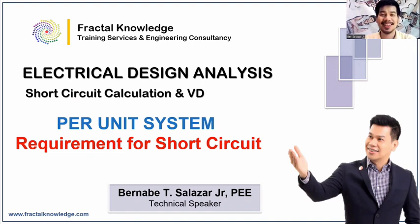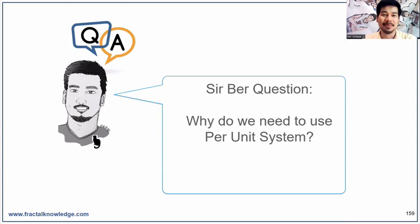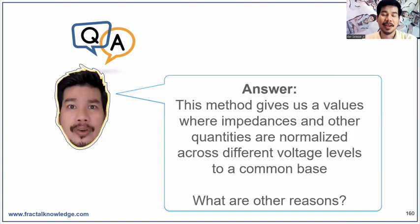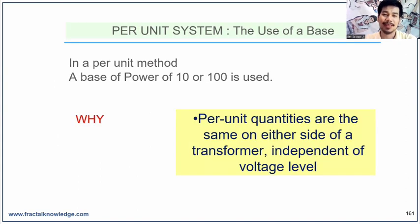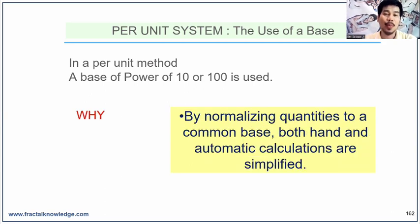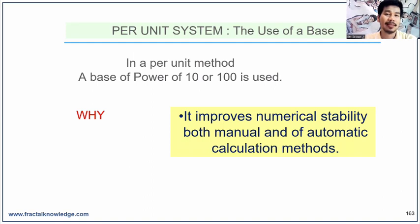This covers the last two items of base knowledge for short circuit calculation: the per unit system and the requirements of short circuit. You may ask why we need to use the per unit system. Per unit methods give us values where impedances and other quantities are normalized across different voltage levels to a common base. Quantities are the same on either side of a transformer, independent of voltage level, simplifying both manual and automatic calculation and improving numerical stability.